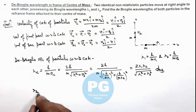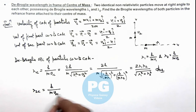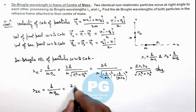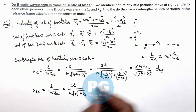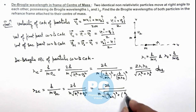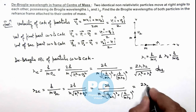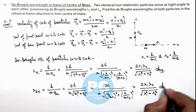Similarly, we calculate lambda of the second particle with respect to the center of mass: lambda_2c = h / (m * v2c). The magnitude of v2c is the same as that of v1c, so the de Broglie wavelength is again 2h divided by m times root of (v1² + v2²). Substituting the same values, this simplifies to the same result: 2*lambda1*lambda2 divided by the square root of (lambda1² + lambda2²).